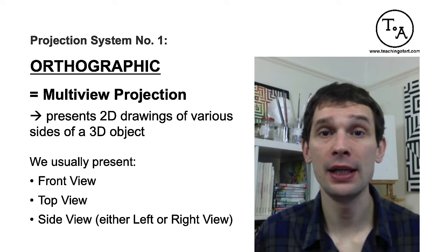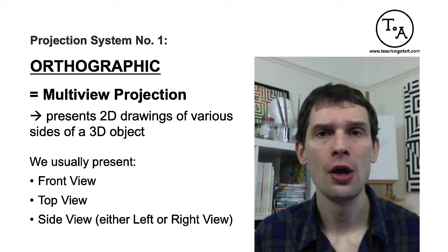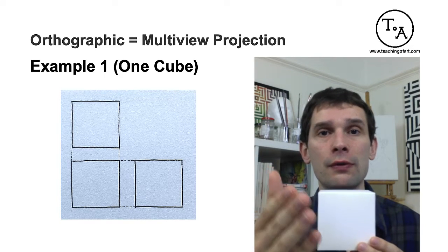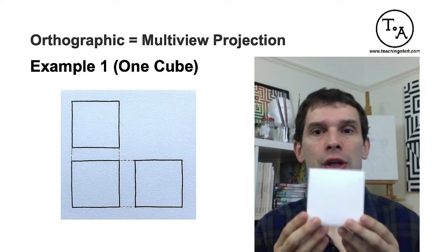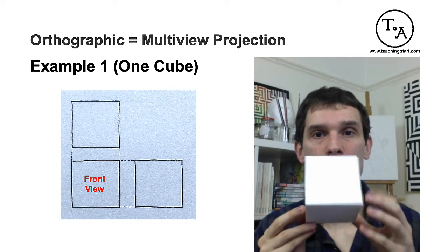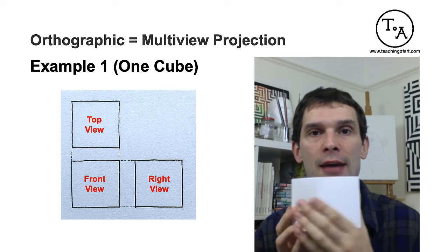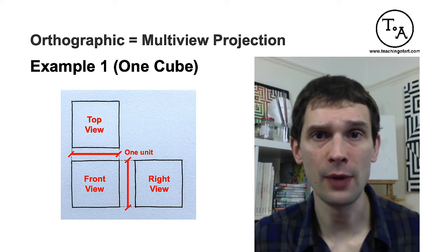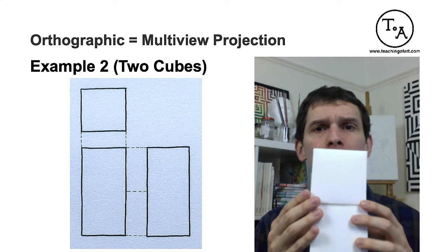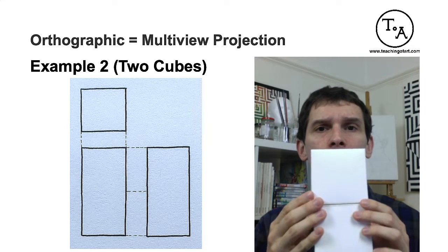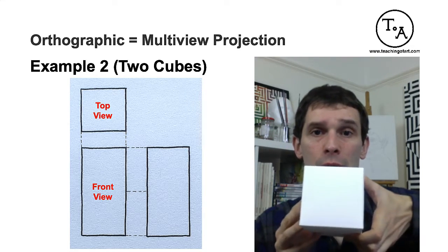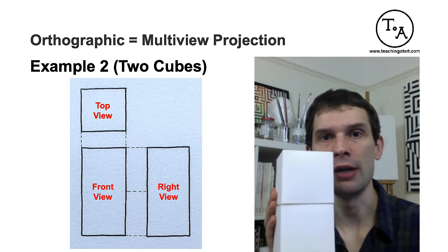Here we have a cube, and the orthographic projection of the cube would look like this. From the position of the viewer — from the camera position — we have the front view, which is a square, then the top view which also would be a square, and then the right view which also would be a square. What happens if we put two cubes on top of each other? In orthographic or multi-view projection, this would be your front view, this would be your top view, and this would be your right view.